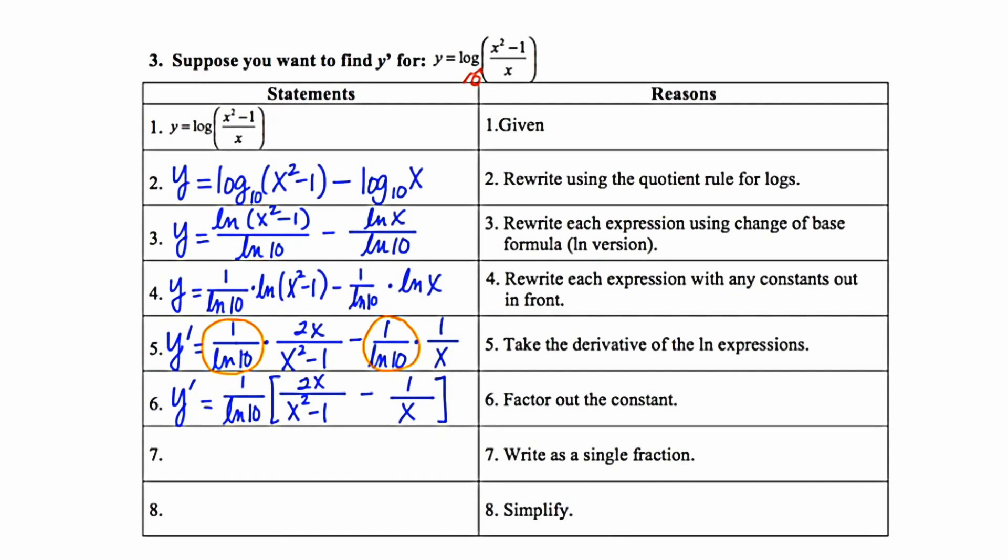In step 7, we're asked to write the result inside of the grouping symbols as a single fraction. Now, the denominator of that single fraction will be x times x squared minus 1.